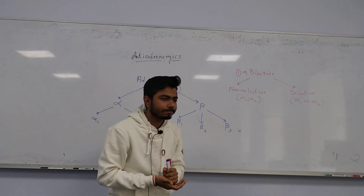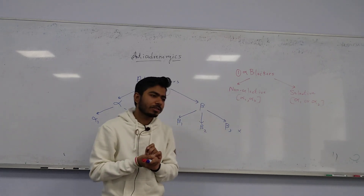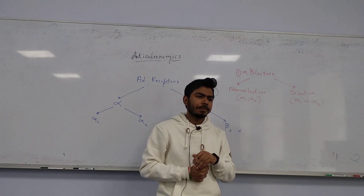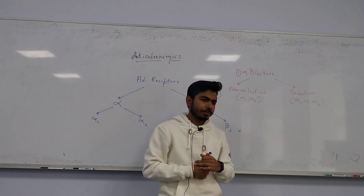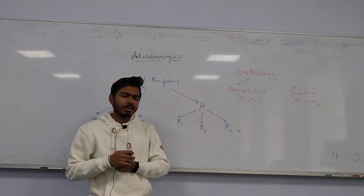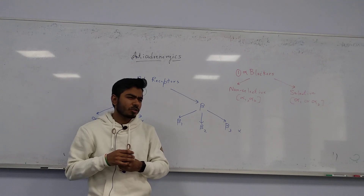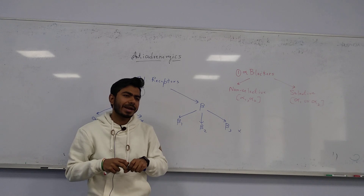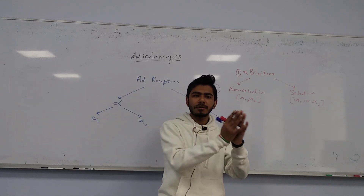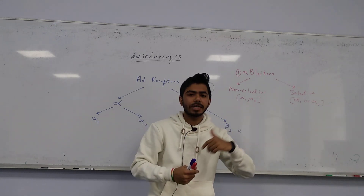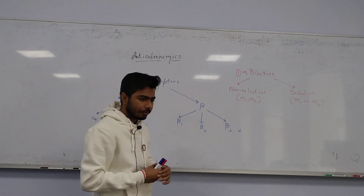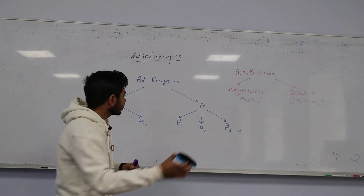Alpha 2 receptors are also present in the pancreas. They can interfere with insulin secretion. We had a question in the last class about a diabetic patient in hypoglycemic coma — in that case we used adrenaline because of its beta 2 effect, since adrenaline acts on both alpha and beta receptors.